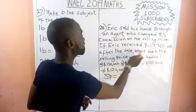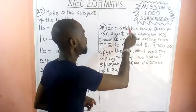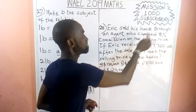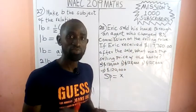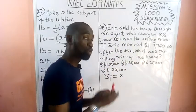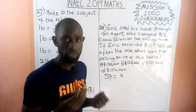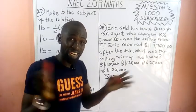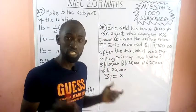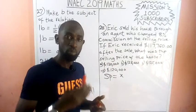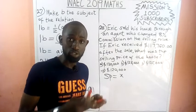Eric received this amount after the agent had already taken his 8% commission. Let me do a quick analysis before answering, so you get a clear picture of how we are going to solve this. It's very simple, but let me put in one or two things so you understand the concept well.